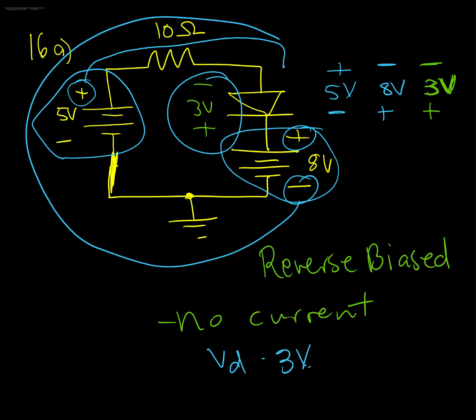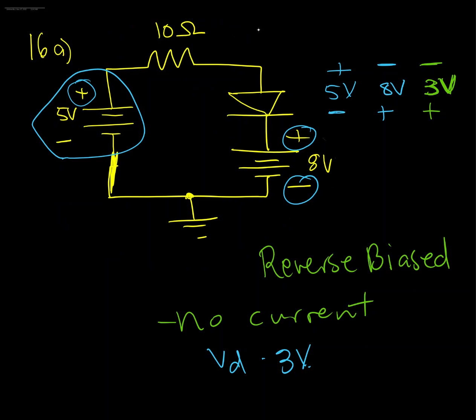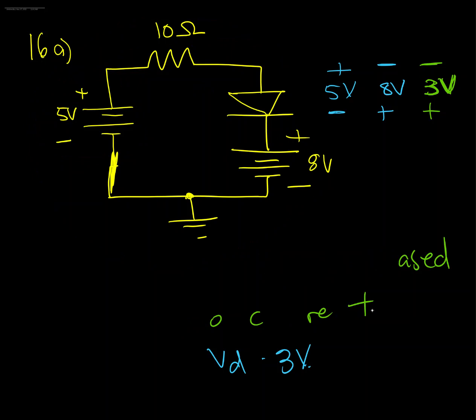Okay now suppose for the sake of example, let's suppose that I reverse the voltage supplies. So actually I'll reverse the diode because that's less drawing. So let me erase my scribbles here and I'm going to keep the supplies the same but I am going to flip the diode around so my diode is now going to face this way.